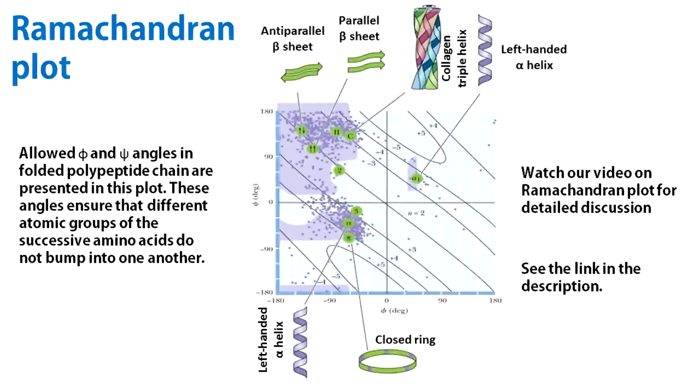These allowed values of phi and psi angles is represented as the Ramachandran plot. The Ramachandran plot tells us about the conformations that a polypeptide chain can adapt, but it does not tell us whether these adapted conformations will be stable.